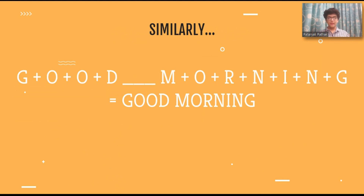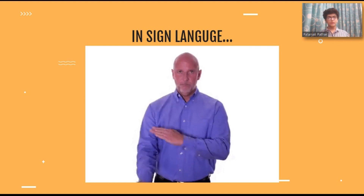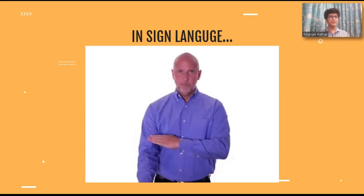Then there are phrases. A few words put together form a phrase which has a meaning of its own. For example, 'good morning' — when you put the words good and morning together, you get the phrase 'good morning,' which is a greeting. Similarly, in sign language, gestures done one after the other have a compound meaning. So the first part of this sign indicates 'good' and the second one stands for 'morning,' and when done together, there is a greeting: good morning.